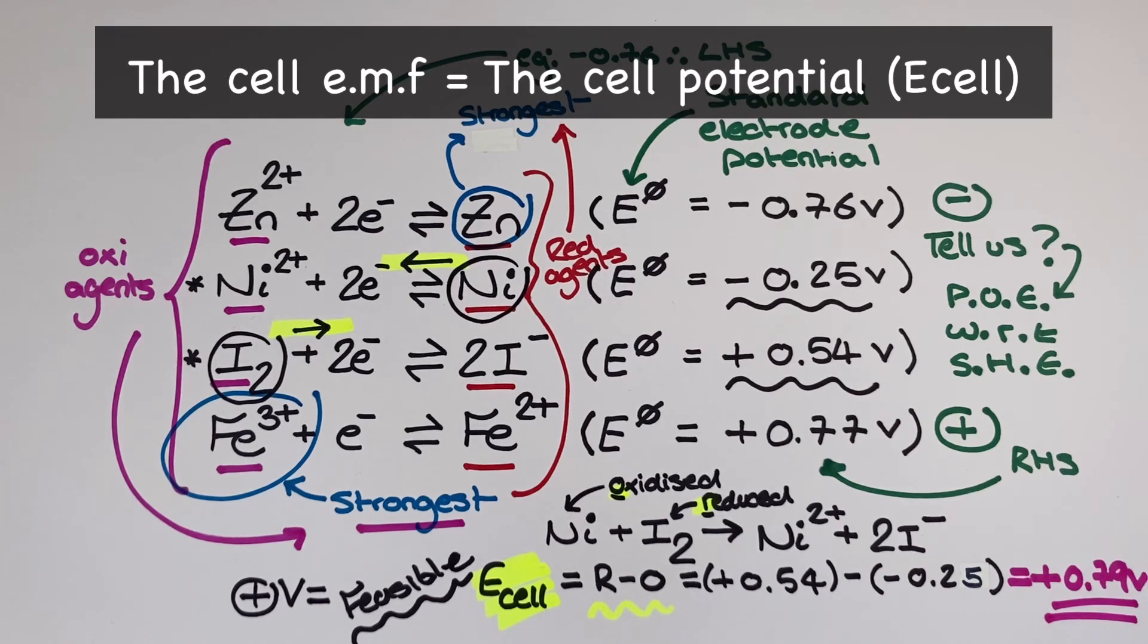To find the cell potential in a lab I would set up a cell apparatus using nickel and iodine half cells. And the voltmeter would read positive 0.79 volts.